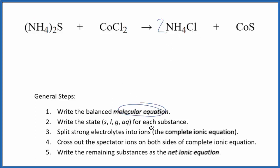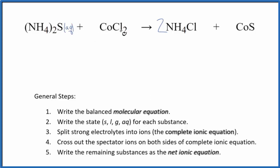Once we've balanced the molecular equation, we can write the state for each substance. Ammonium compounds are very soluble, so that's going to be aqueous — it's going to dissolve and split apart into its ions. Same for compounds with chloride — that's going to be soluble as well. Ammonium chloride: soluble.